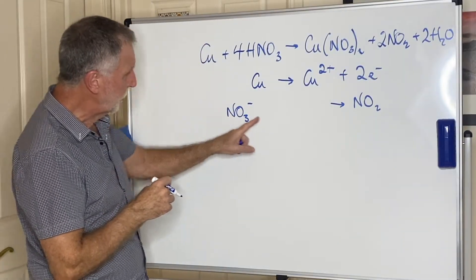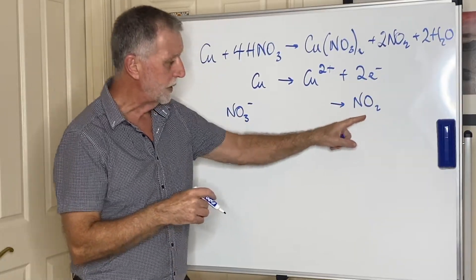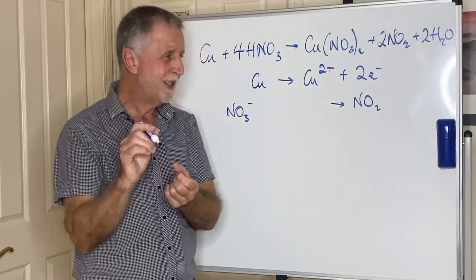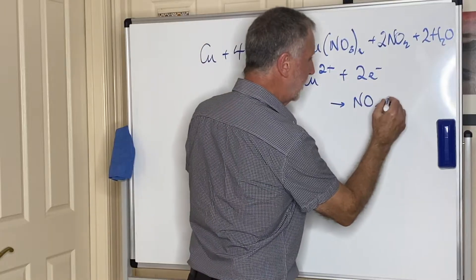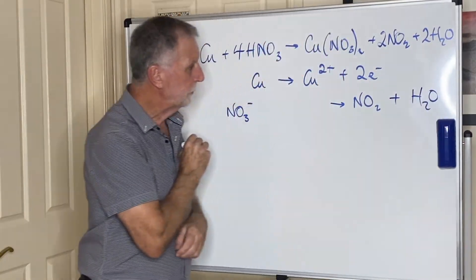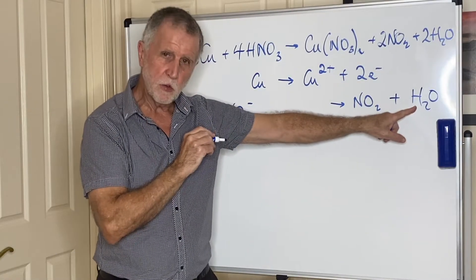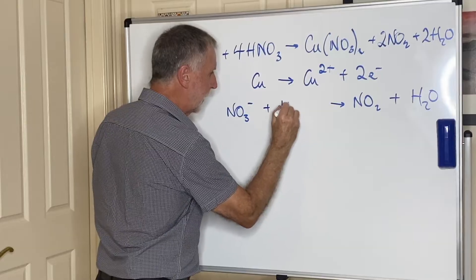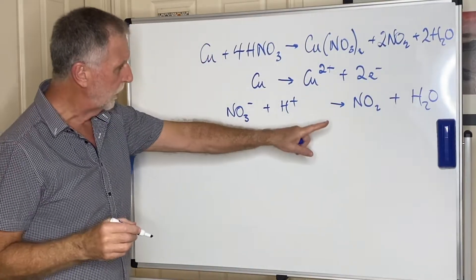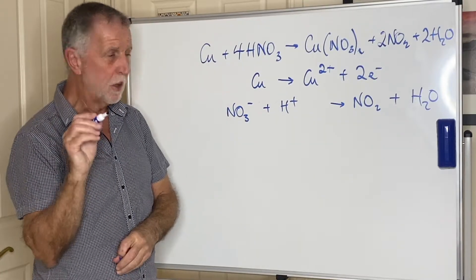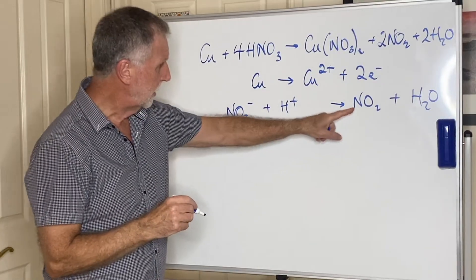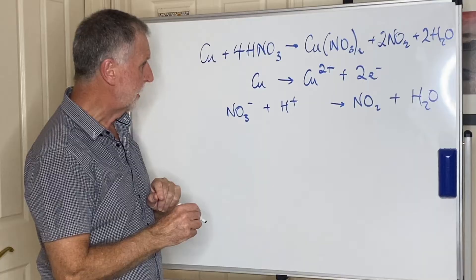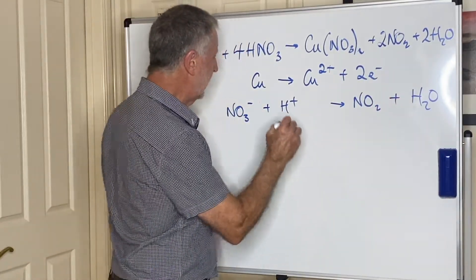With one nitrogen each side but three oxygens on the left and two on the right, it's impossible to balance without adding something else. Whichever side is short of oxygen — which is the right side here — add oxygen in the form of water. By adding water we've introduced hydrogen, so we now need to put hydrogen on the left side as H+ ions. Now balance the atoms: one nitrogen each side, three oxygens each side, and we need 2H+ on the left to balance the two hydrogens in water.